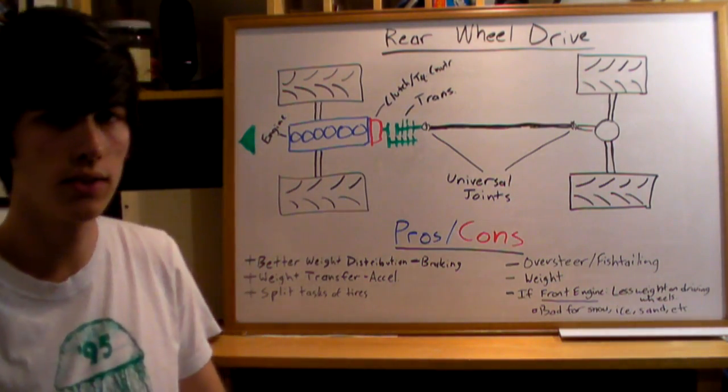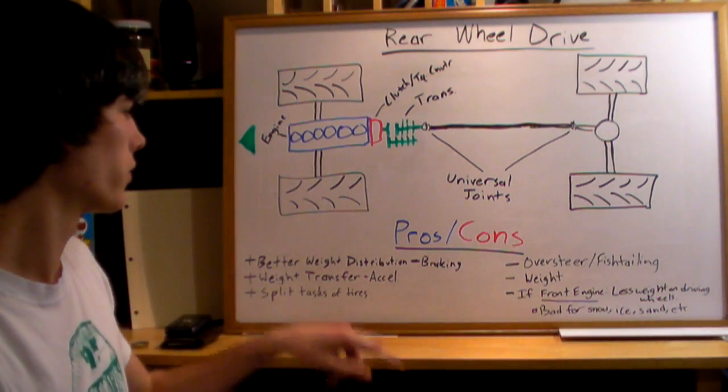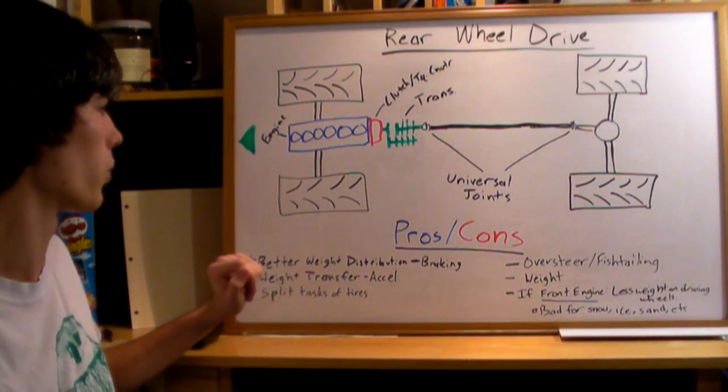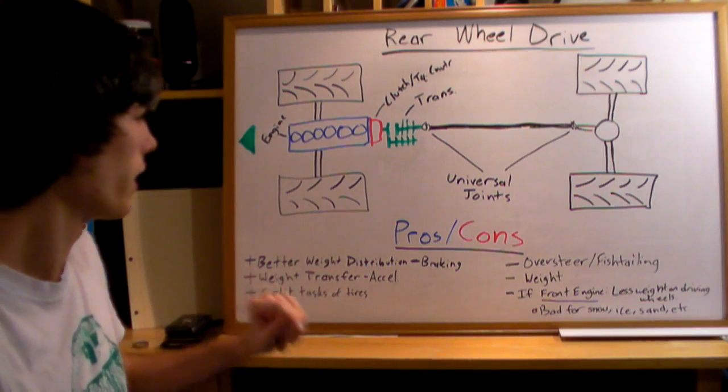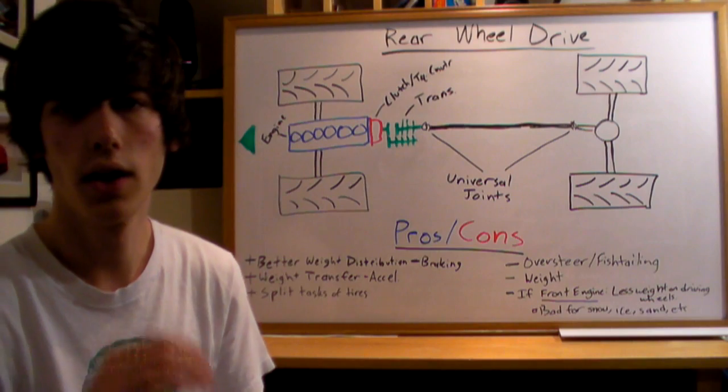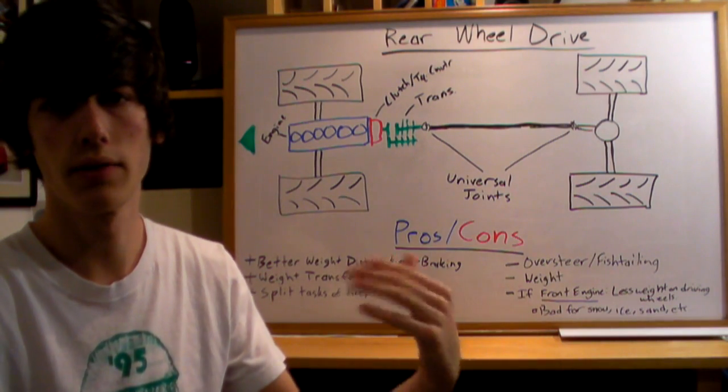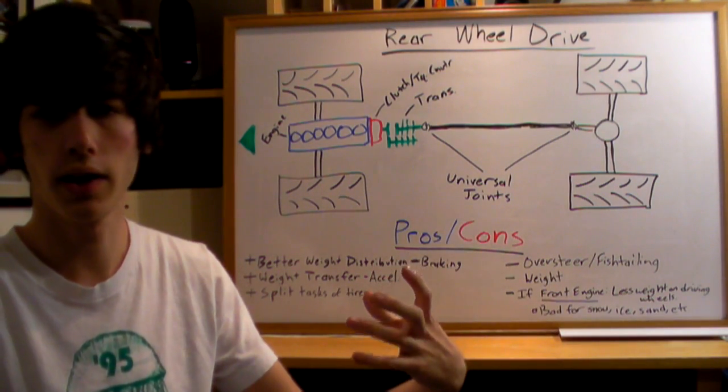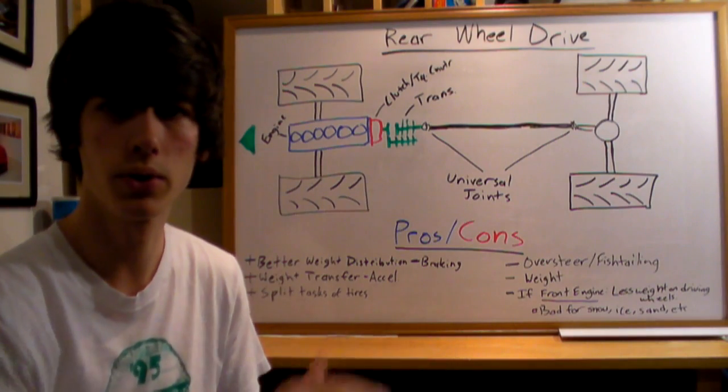What are the advantages and disadvantages? The two biggest advantages of rear wheel drive are weight transfer and weight distribution. Under acceleration, the weight of the car transfers to the rear tires, so you have more grip and can push it harder.